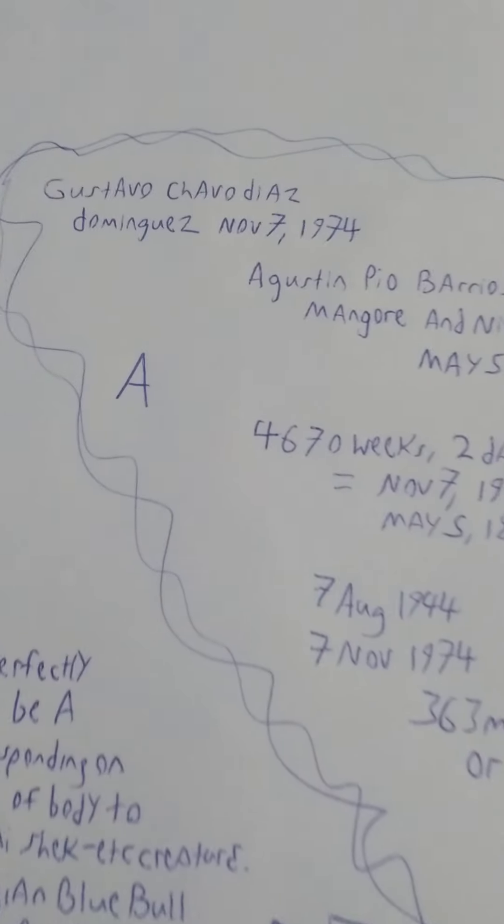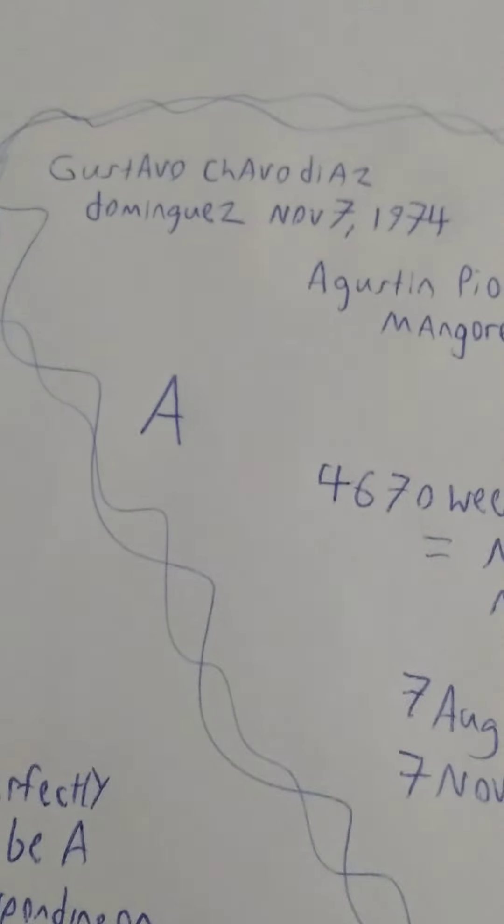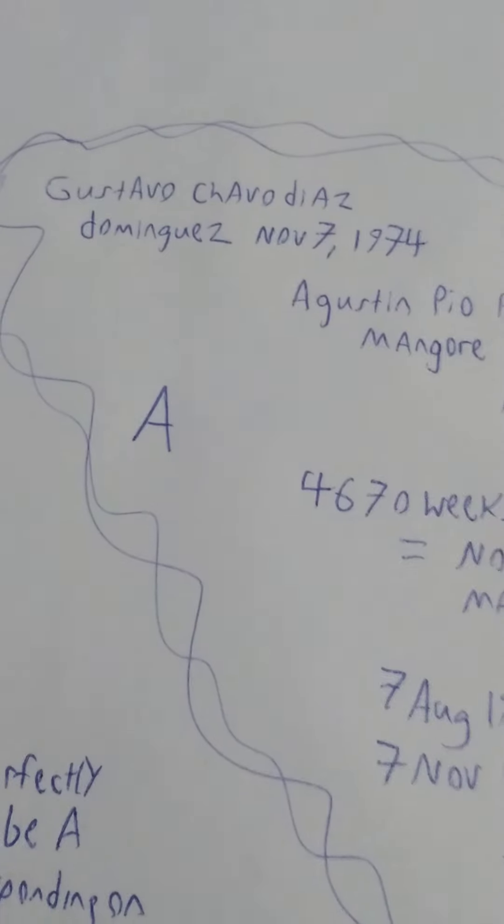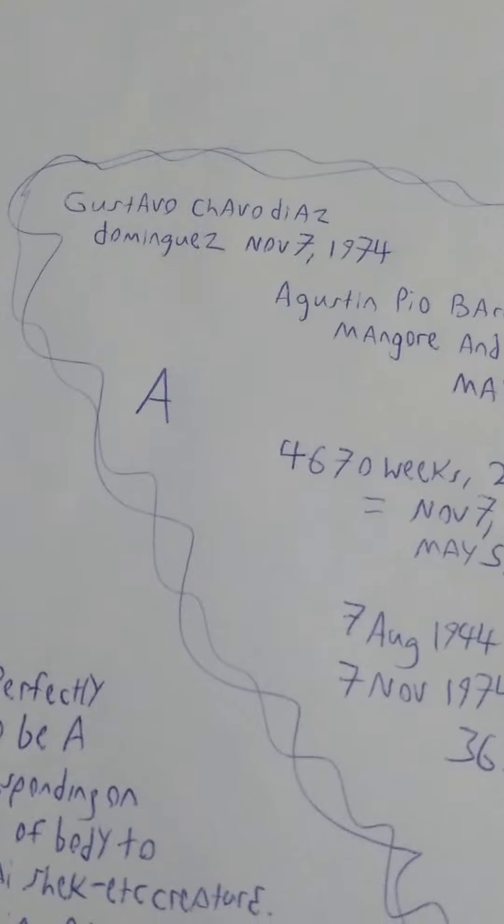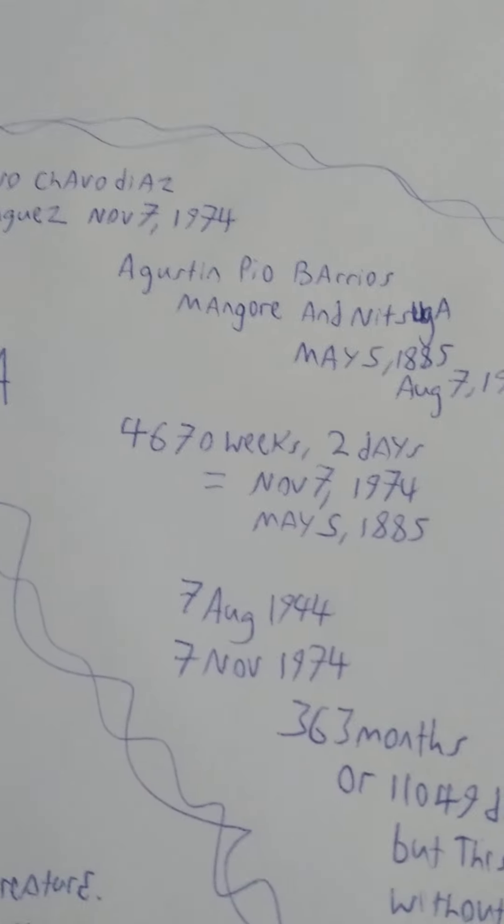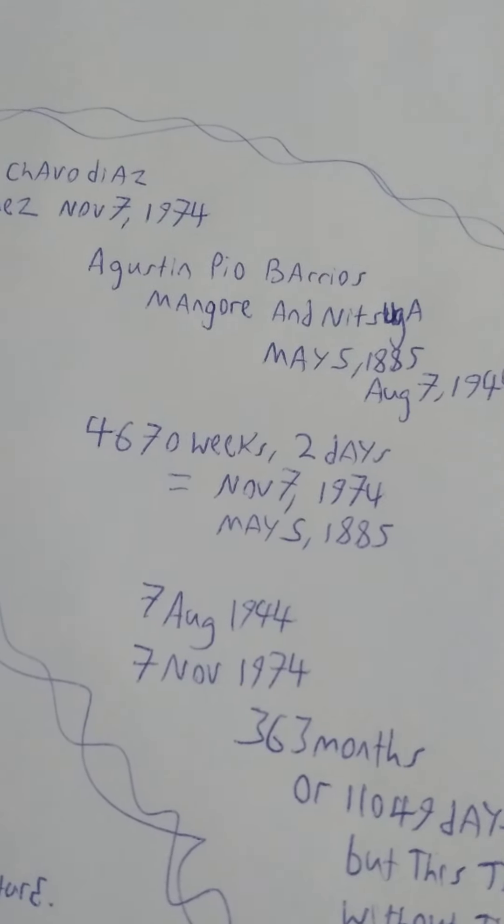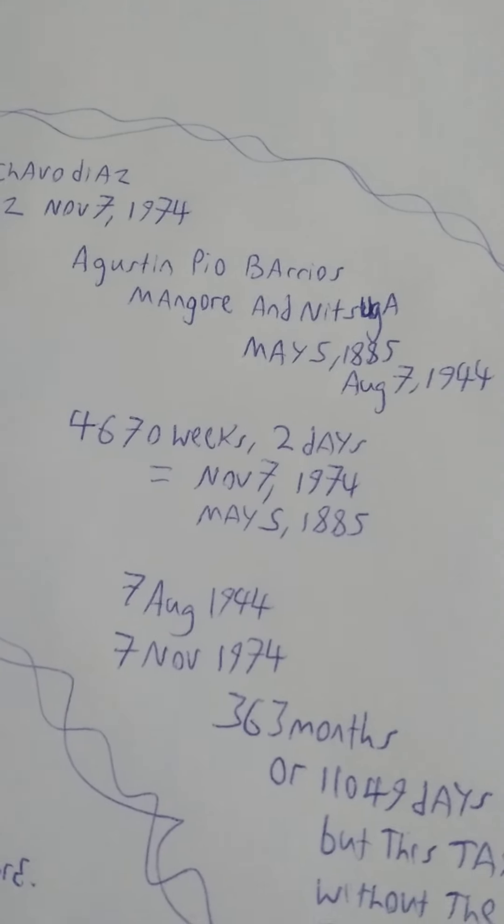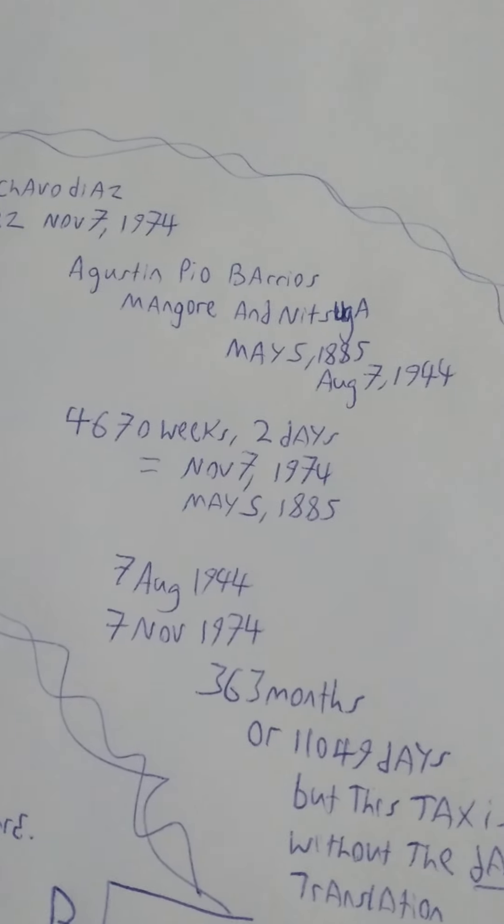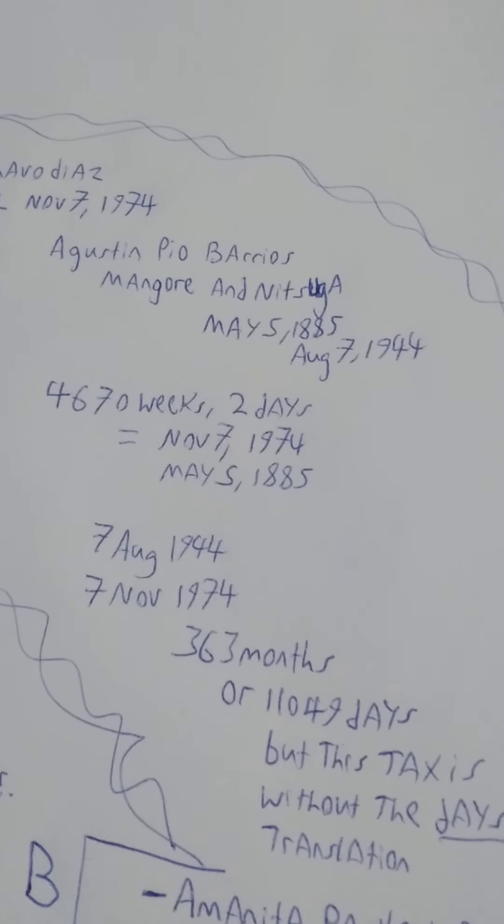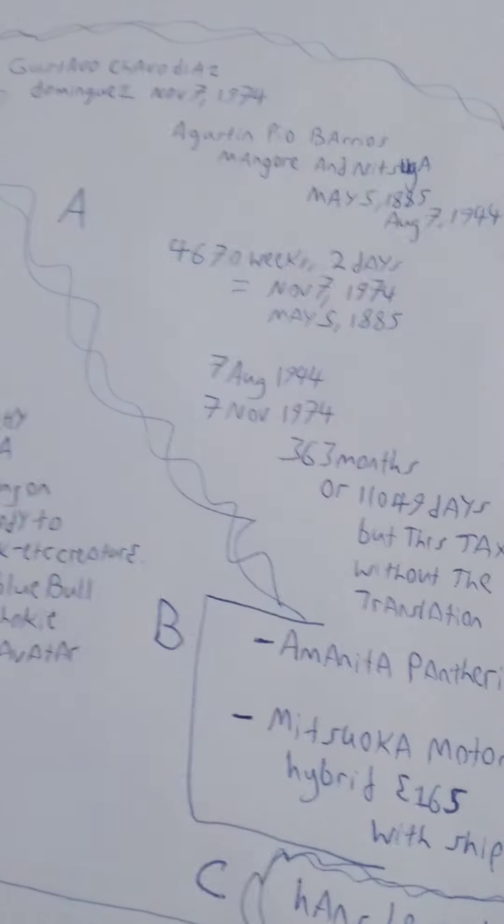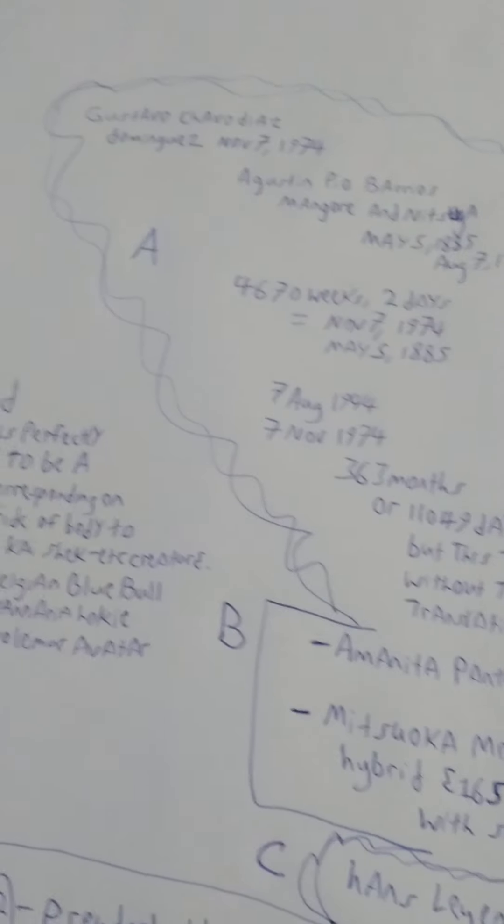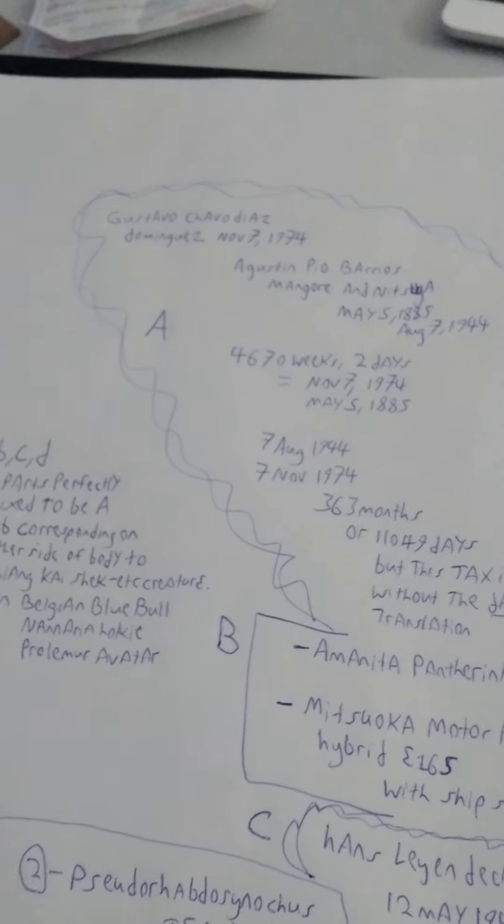So A, B, C, and D is here. We'll go from the top. Gustavo Chavo Diaz Dominguez, November 7th, 1974. Augustin Payo Barrios Mangore, May 5th, 1885 to August 7th, 1944. These are available on Wikipedia, that's where I get some of my information. Beware because